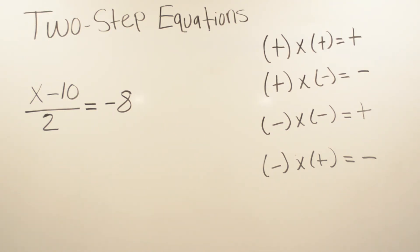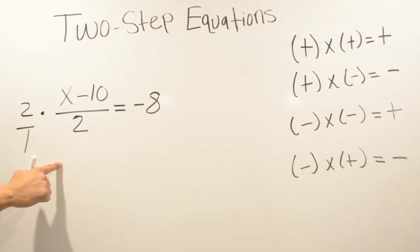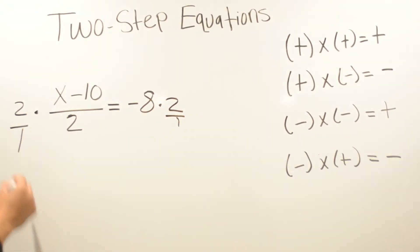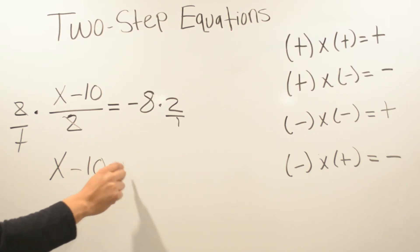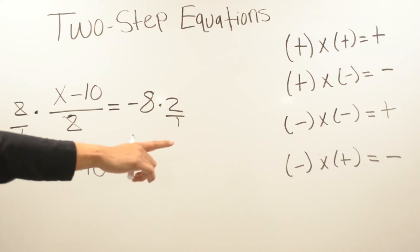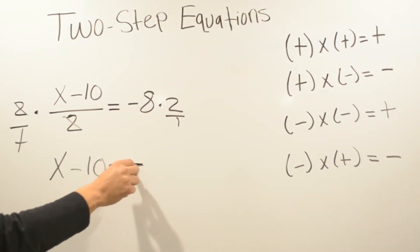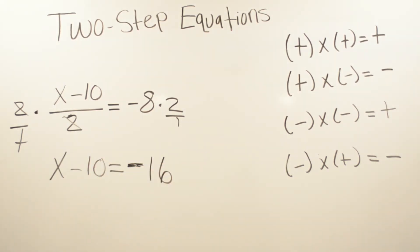This problem we have x minus ten, divided by two, equals negative eight. We have division, so to get rid of division we have to multiply by two over one. Whatever we do on one side of the equal sign, we make sure we do on the other side. We cross this out, so we have x minus ten equals — on the right-hand side, a negative times a positive is going to be a negative, and eight times two is 16.